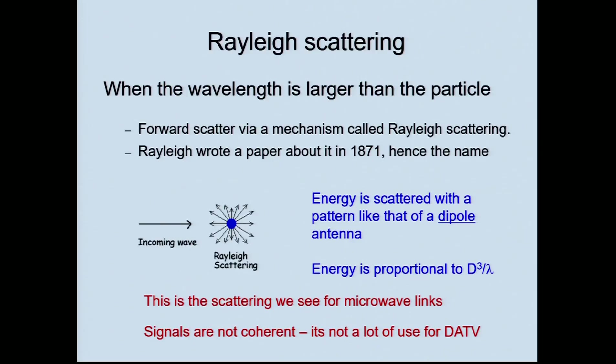One problem is that the signals aren't very coherent. So 10 gigahertz rain scatter tends to sound a bit like an aurora. I don't think it's going to be much good for QPSK. Maybe some DVB-T might be able to make use of that sort of scattering, but probably not the higher rate stuff. The bands that give the best rain scatter are the higher frequency ones, and the sweet spot — accounting also for the increase in attenuation — is probably about 10 to 24 gigahertz.